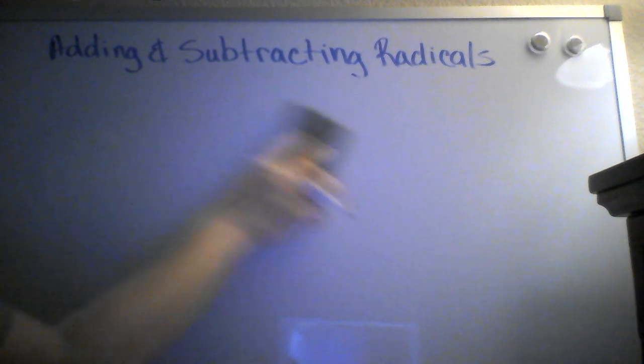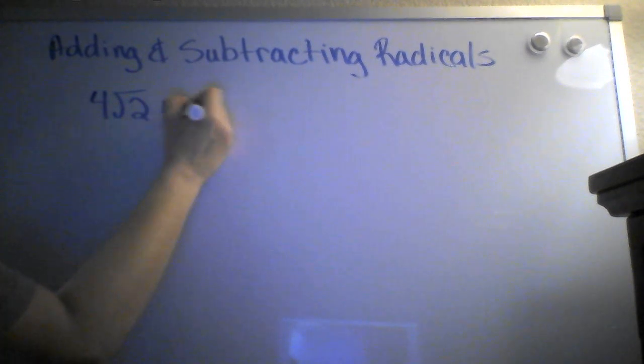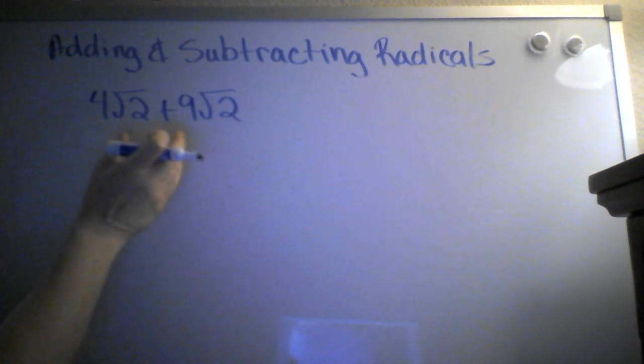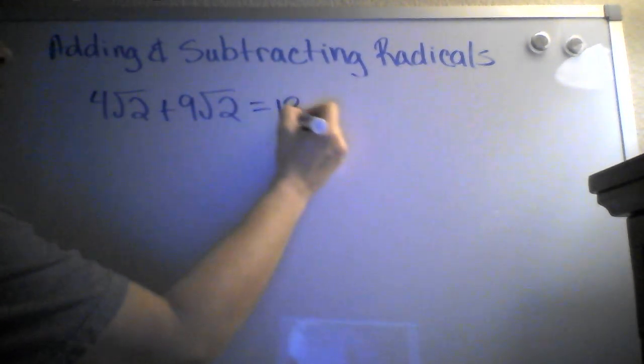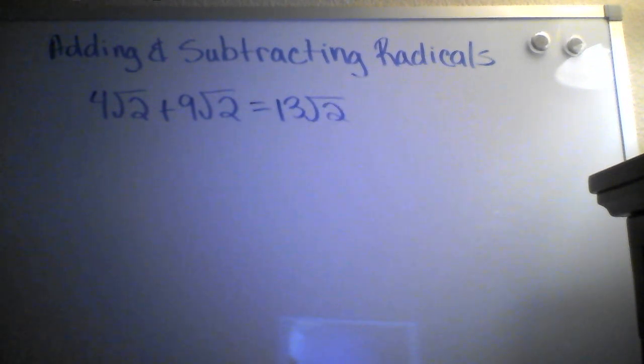It's a lot like that when adding and subtracting radicals. If I had 4 radical 2 plus 9 radical 2, I could add those together because they're both radical 2s. There's 4 of them and 9 of them, so if I added that together, that gives me 13 radical 2s.